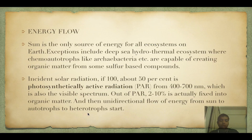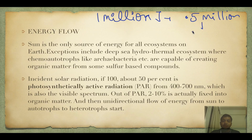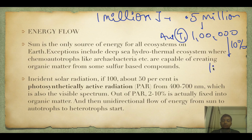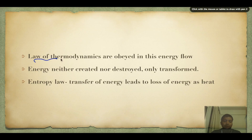Assuming one million joules of total sunlight: only 50% is photosynthetically active, that is 500,000 joules. Out of it, 2% — that is 10,000 joules — is fixed by autotrophs at T1. Then the 10% rule applies: it goes to 1,000 at T2, then 100 at T3, then 10 at T4, and finally only 1 at T5.